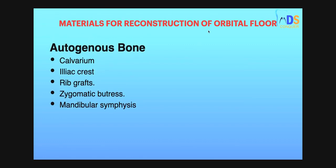What are the materials used for reconstruction of the orbital floor? Autogenous materials include calvarium, iliac crest, rib graft, zygomatic buttress, and mandibular symphysis. They can ask which autogenous material is used for reconstruction of the orbital floor — answers can be calvarium, iliac crest, rib grafts, zygomatic buttress, or mandibular symphysis.